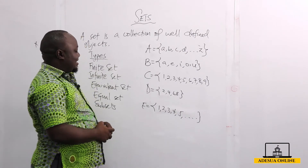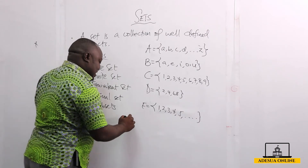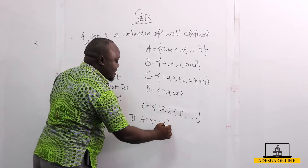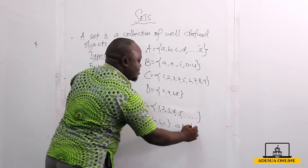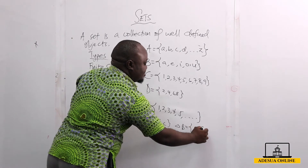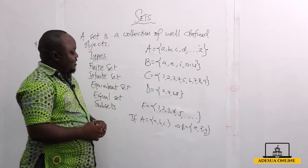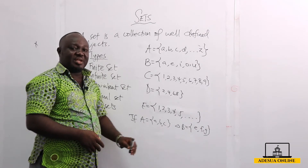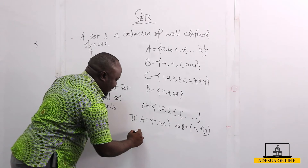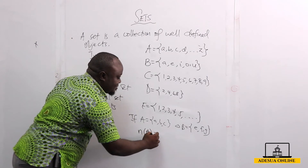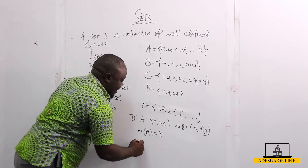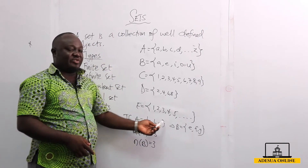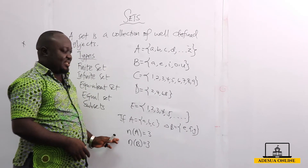Now we have what we call equivalent sets. If I have a set A equal to N, B, C, and a set B equal to E, F, G — A is equivalent to B because the number of elements in A is the same as the number of elements in B. The number of elements can be denoted as N(A) equals 3, and N(B) equals 3. Since they have the same number of elements, we say this is an equivalent set.